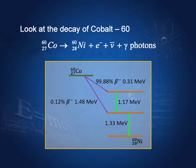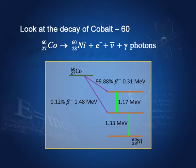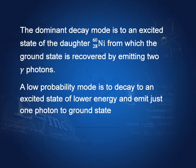Another example: cobalt-60 is an unstable nucleus. It emits an electron (beta particle) and an anti-neutrino; its atomic number goes to 28, and it also emits a gamma photon. The daughter nucleus, nickel, is left in an excited state. Most of the time it goes to an intermediate excited state and may emit two photons to reach the ground state. In 0.12% of cases, it goes directly to a state that decays by emitting a gamma of energy 1.33 MeV. So there can be more than one gamma emission depending on how the nucleus decays.